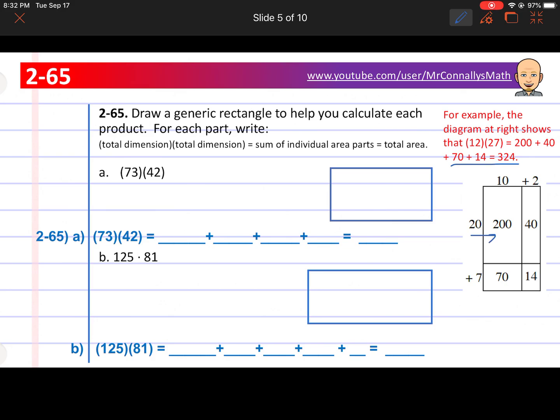In this problem, we've got the example over here. Remember, we're multiplying like this. So 20 times 10 gives us 200, 20 times 2 gives us 40. And then down here, we do 10 times 7 equals 70, and then 7 times 2 gives us 14. That's the basics on how to do a generic rectangle.